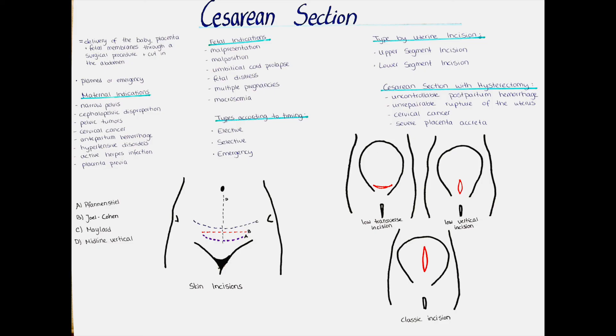We can also differentiate cesarean sections as either primary or repeated, depending on whether the mother had a cesarean section before. In some cases a hysterectomy — removal of the uterus — is done at the same time as the cesarean section. This is usually done when there is an uncontrollable postpartum hemorrhage, an irreparable rupture of the uterus, operable cervical cancer, or in cases of placenta accreta that cannot be separated from the uterus.